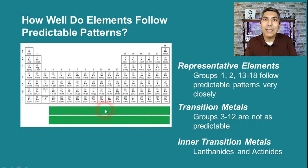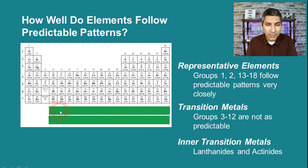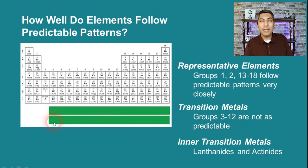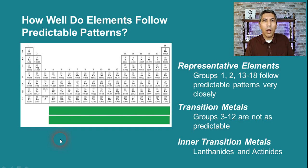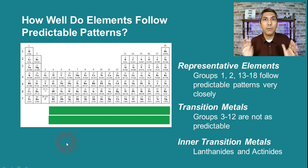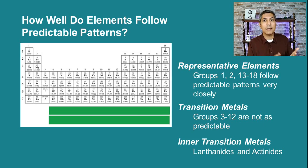The inner transition metals are sometimes called the lanthanides and the actinides. The first series at the bottom starts with lanthanum, so the elements after it are called the lanthanides. The second series starts with actinium, so those are called the actinides. These elements are fairly rare — some more common than others in the earth's crust — but they are very important for technological uses. A lot of these inner transition metals are found in magnets, cell phones, or computers.